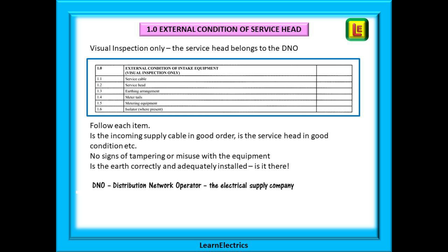Section 1 has six items listed, 1.1 through 1.6. Things to check include: is the incoming supply cable in good order? Is the service head in good condition? There should be no signs of tampering or misuse. Is the earth correctly and adequately installed — in fact, is it there? This is an inspection-only section. You or your customer do not own the service head — it is the property of the DNO. If anything is wrong, it should not be you that puts it right; your duty is just to contact the DNO and request that they put it right.